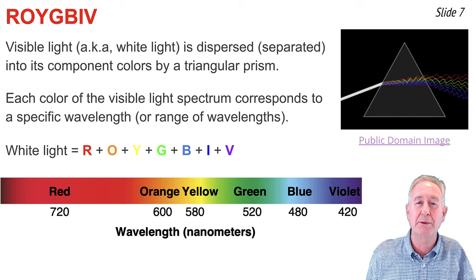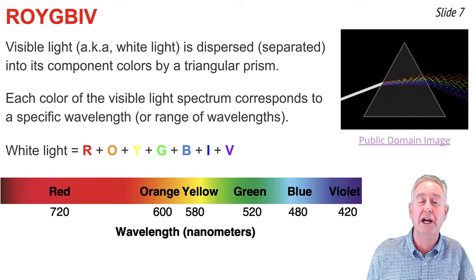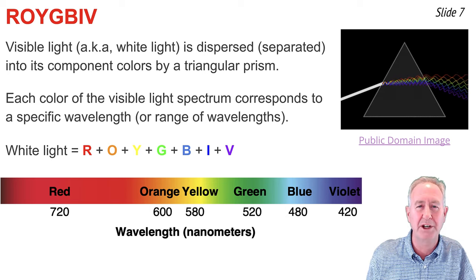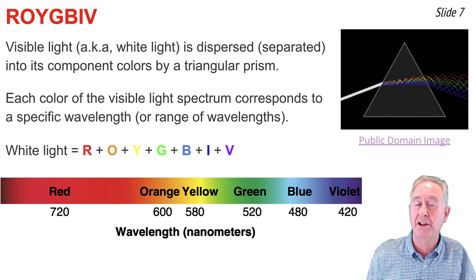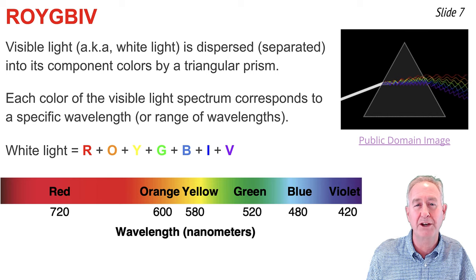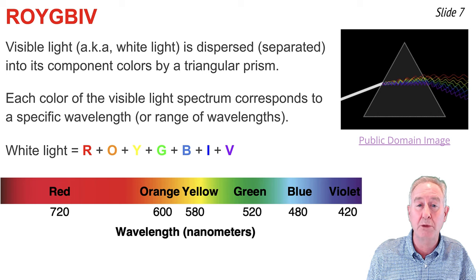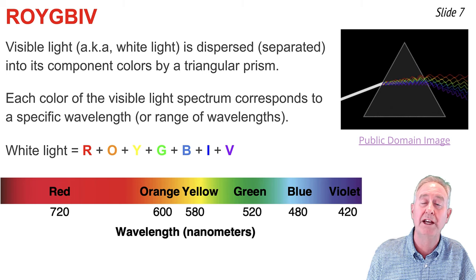The color red is associated with the longer wavelengths, and it has wavelength values of approximately 720 nanometers. And the color violet is the shorter wavelength color, and it has wavelength values around 420 nanometers. A nanometer is a very small unit of distance equivalent to one billionth of a meter.